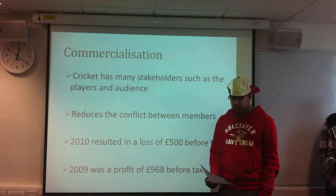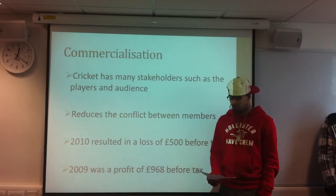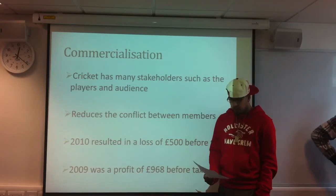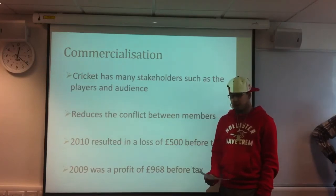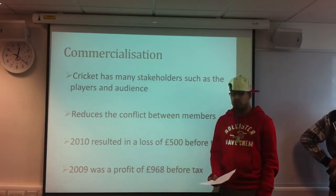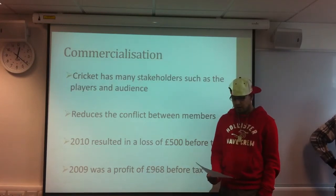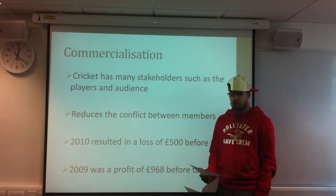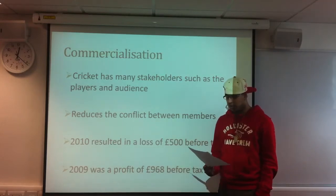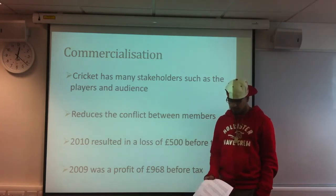In 2010 the ECB, which is the England and Wales Cricket Board, had a turnover of £106,036. After all expenses — player wages and ground upkeep — they came to a loss of £500 before tax. In 2009 the turnover figures were £114,462, and after all expenditure they made a profit of £968 before tax.